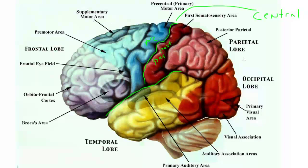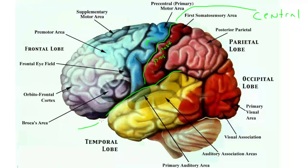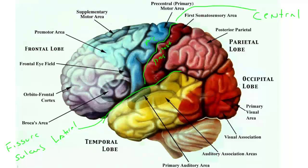So we have the central sulcus dividing two major gyri and two major lobes of the cerebral cortex. The second one is called the lateral sulcus, or the lateral fissure. We tend to use the word fissure for a particularly deep sulcus. The lateral fissure separates the frontal and parietal lobes together from what's underneath it, which is the temporal lobe.